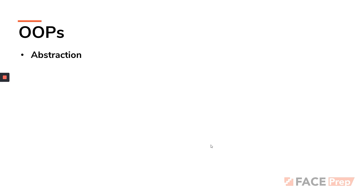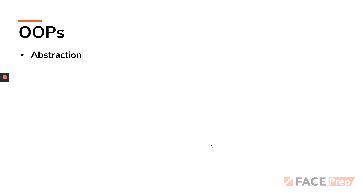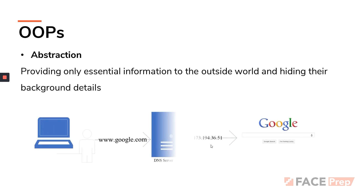First up we have abstraction. In full term it is called data abstraction. The definition goes like: providing only essential information to the outside world and hiding background details. This means the code will let you use only what is required, and hide everything else in the background — we cannot see the operations or how things are working, only what is happening in the front end. A good example is the use of websites.